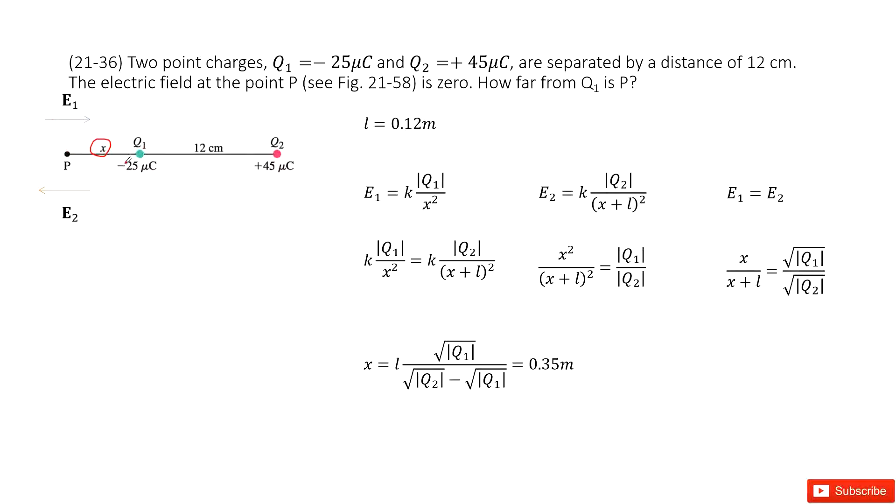It should be pointing to the negative charge. So E1 looks like this way. And if we write down the magnitude of E1, it is k Q1 over X squared, because the distance between P and Q1 is X. And now we look at the charge Q2.